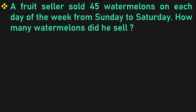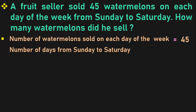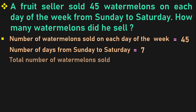The next sum: a fruit seller sold 45 watermelons on each day of the week from Sunday to Saturday. How many watermelons did he sell? The number of watermelons sold on each day is 45. He sells from Sunday to Saturday — that is Sunday, Monday, Tuesday, Wednesday, Thursday, Friday, Saturday — which is 7 days, making 1 week. He sold 45 watermelons on each of those 7 days.